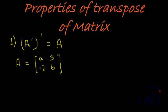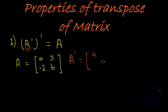The first property is: the transpose of a transpose of a matrix A will be the matrix itself. So what it means is if you take the transpose of A, written as A', and then transpose it once again, you get A itself. Let us check it with an example. Here is matrix A. We know from the previous video how to make a transpose, so the transpose of A, which is A', keeps the diagonal elements intact and flips the position of the non-diagonal elements.